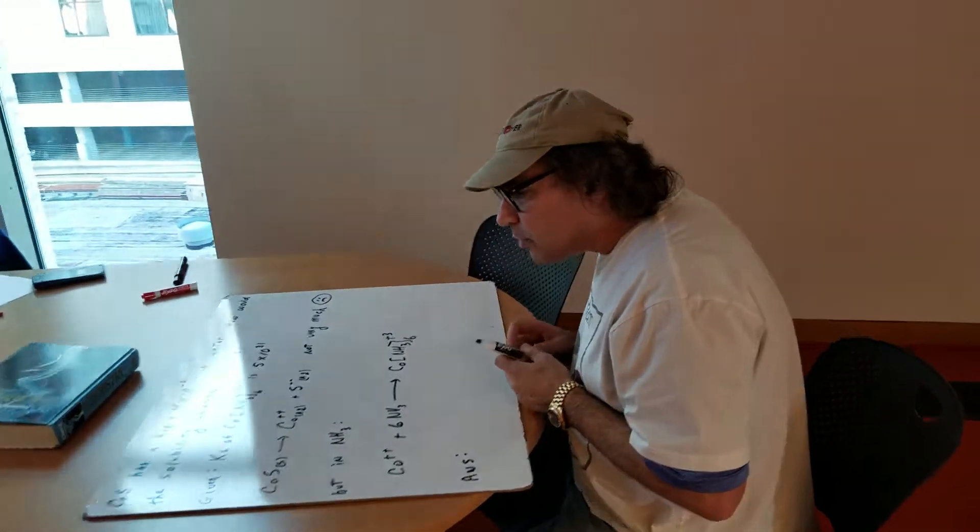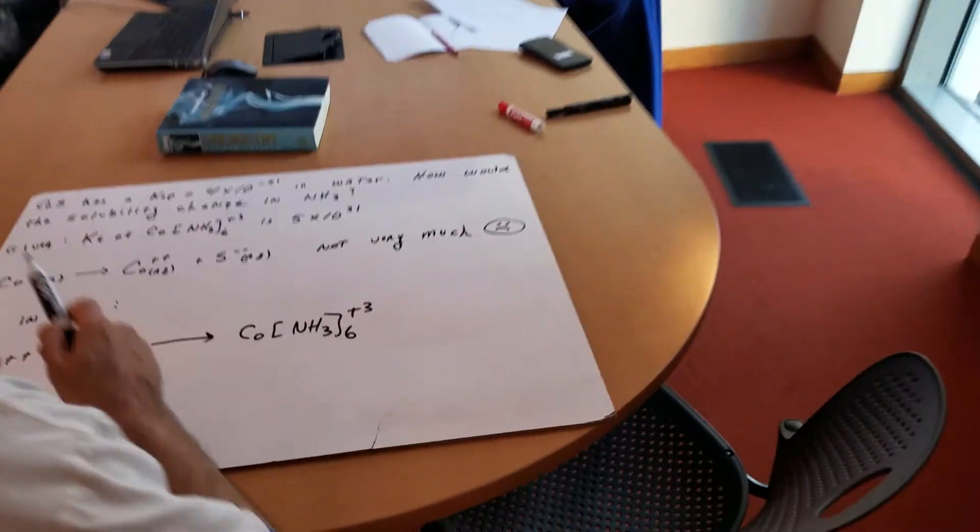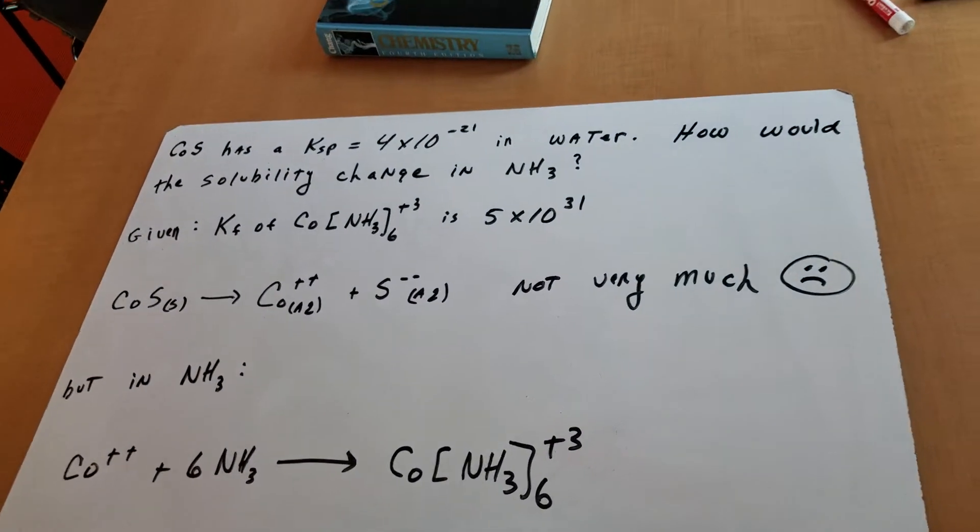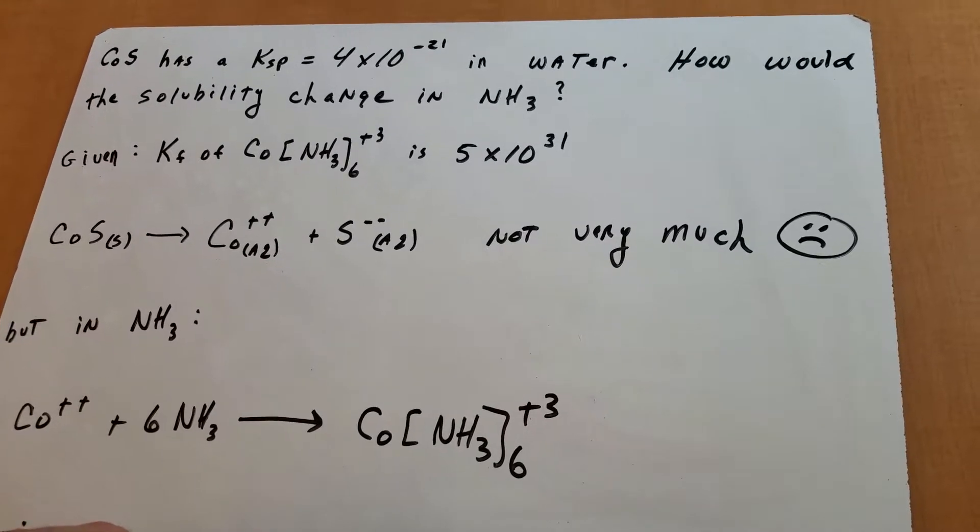There indeed is things on complex ions, so come around. I'm going to do a really great theory question for you. Okay, great. In this example that I prepared, you have cobalt 2-sulfide, and I gave you the Ksp is 4 to the minus 21 in water.